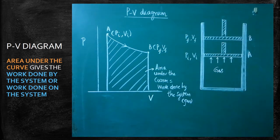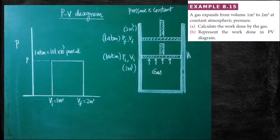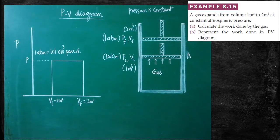That is the purpose of drawing the PV diagram. A PV diagram is a graph drawn between pressure and volume, within which we are able to find out the pressure and volume changes, and at the same time calculate the work done by the system. Just to understand the PV diagram, we are going to solve problem number 8.15.